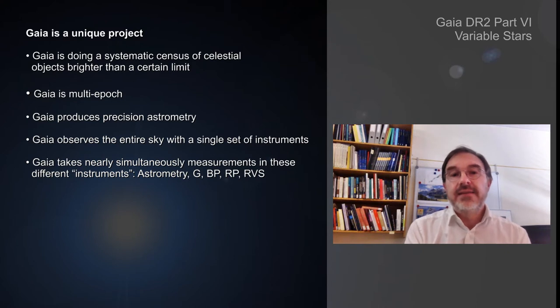Gaia takes nearly simultaneous measurements in different instruments for the astrometry, the photometry in G, BP, and RP integrated, in spectrophotometry in BP and RP, and for the radial velocity instrument RVS. All these measurements are useful when variable stars are studied.